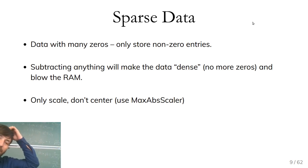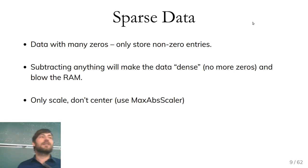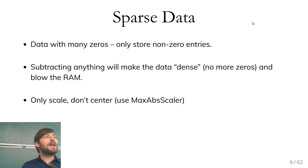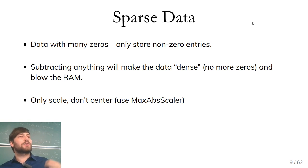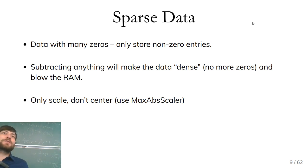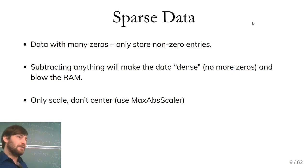One thing to note is that most of these scalers can't really be used with sparse datasets — those that are mostly zero. You get this a lot in text processing and genetics. If you have a hundred thousand features but only two are non-zero, you can't store all the zeros — it would blow up your RAM. If you try to subtract the mean from such data, the mean is non-zero, so you'd subtract a non-zero number from all the zeros and then everything becomes non-zero, blowing up your RAM.